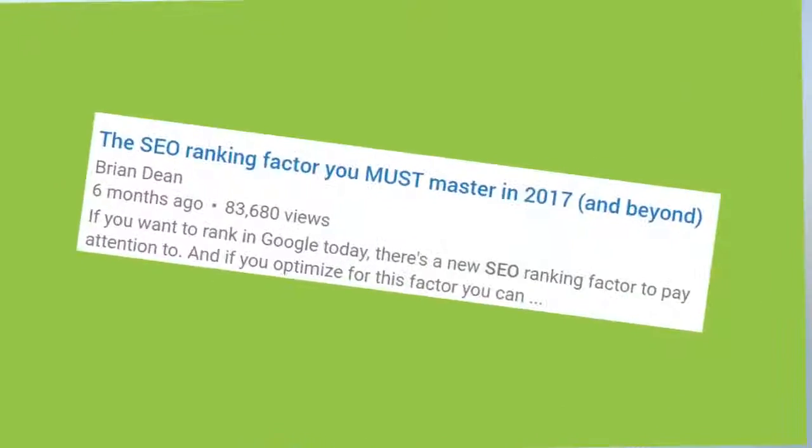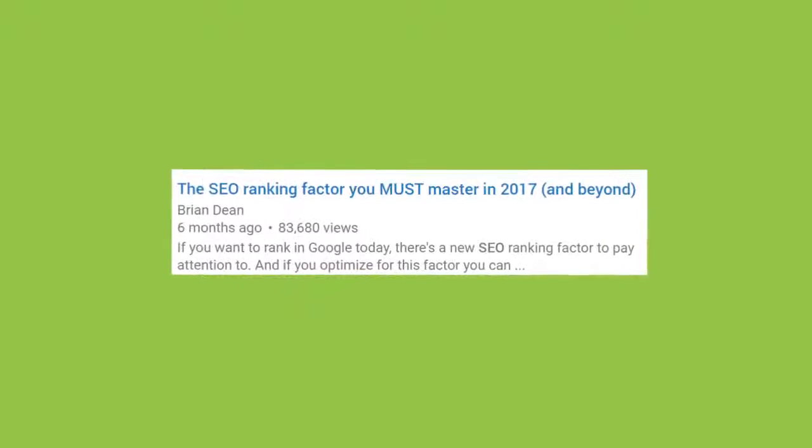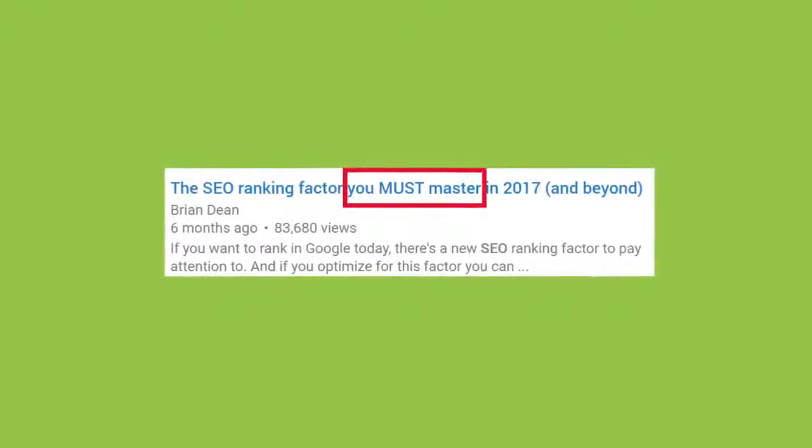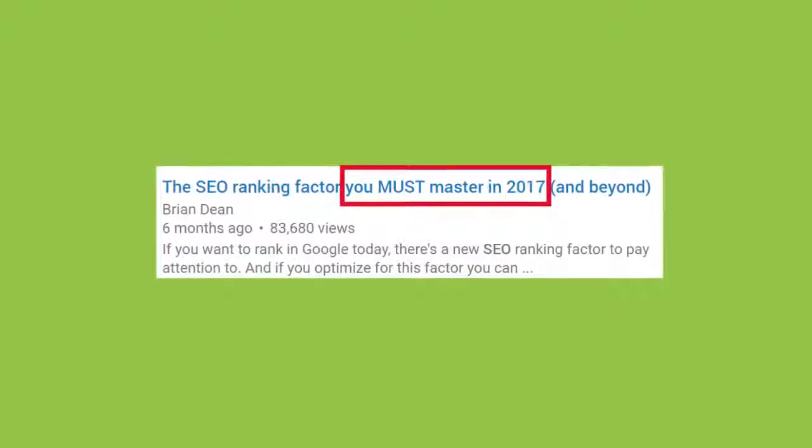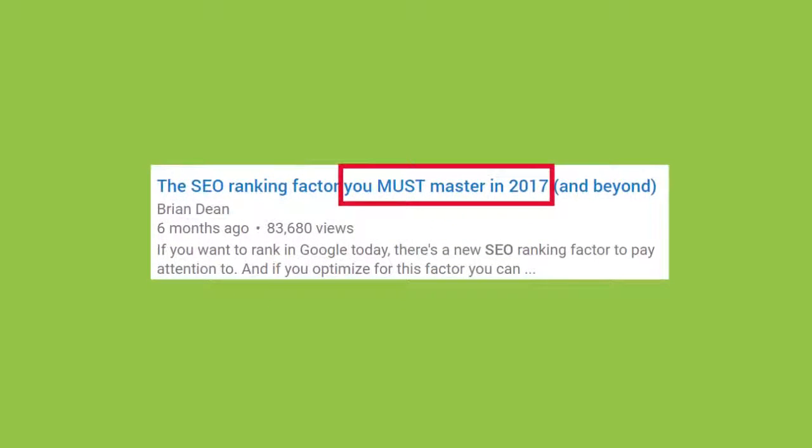For your title, like I mentioned before, you want to include your target keyword once. Other than that, your goal with your title should be to maximize your click-through rate. As you can see, my video title is emotionally compelling. I also include the current year so people know that the content is still relevant.